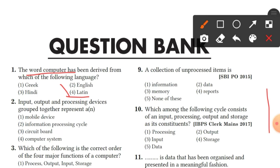Question 2 is: input, output and processing device grouped together represent what? Input is the data we put into the computer, output is the result, and processing device — together they represent a computer system. Option 4, computer system, is the right answer.